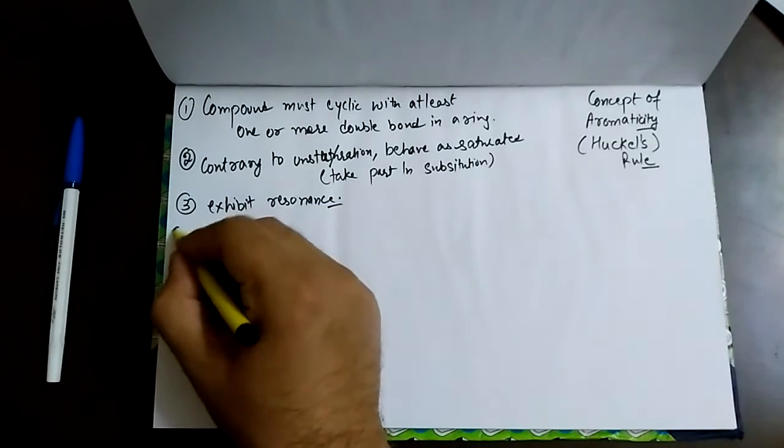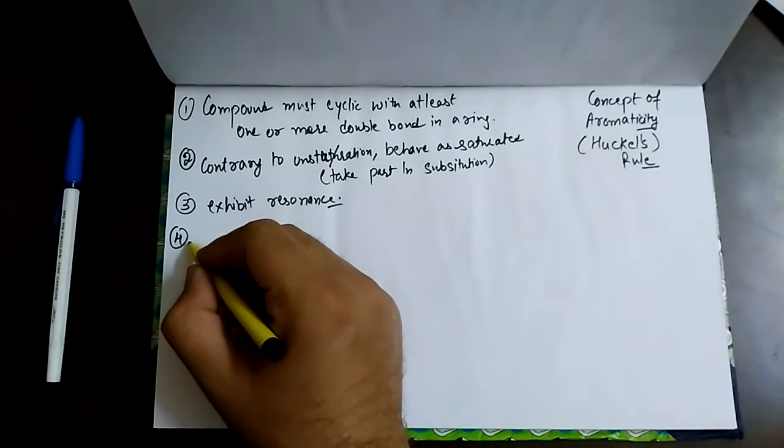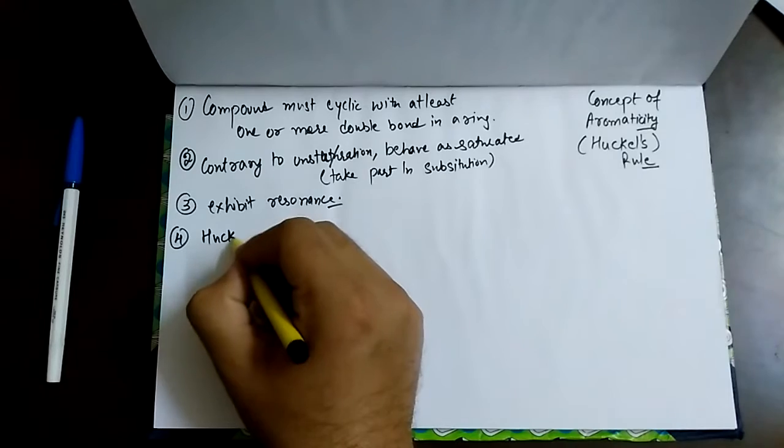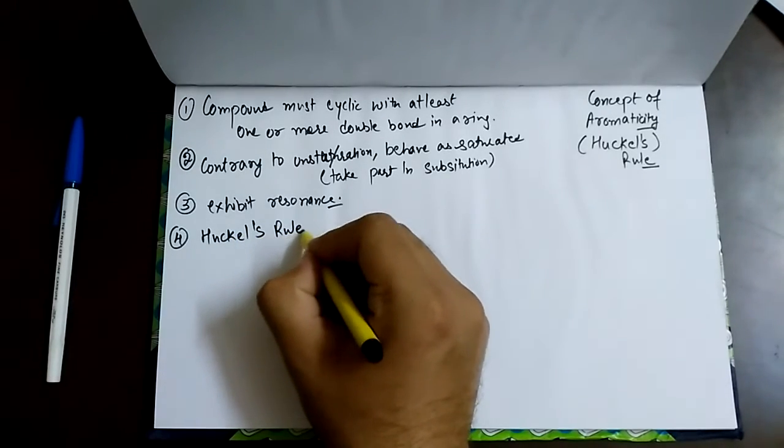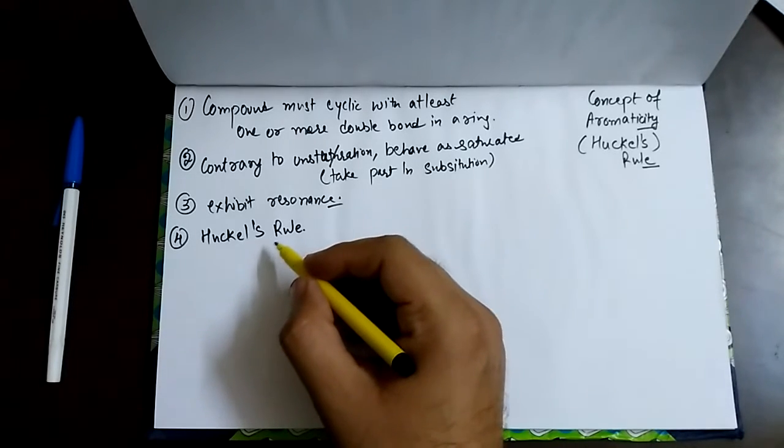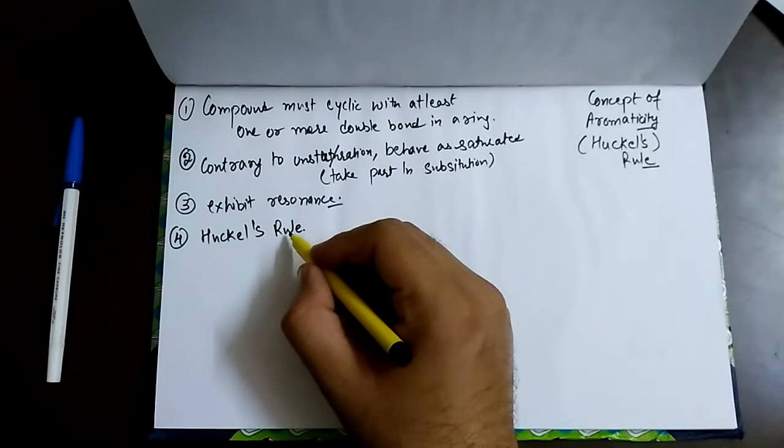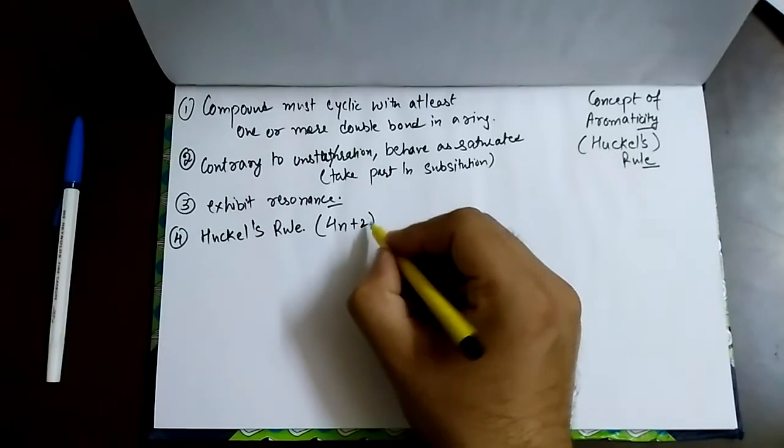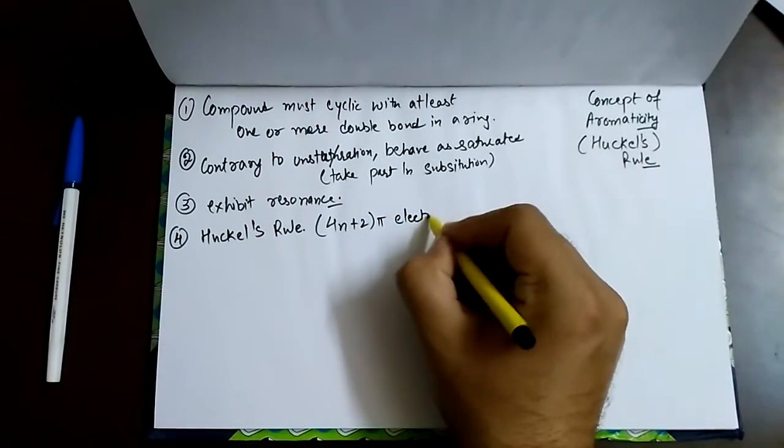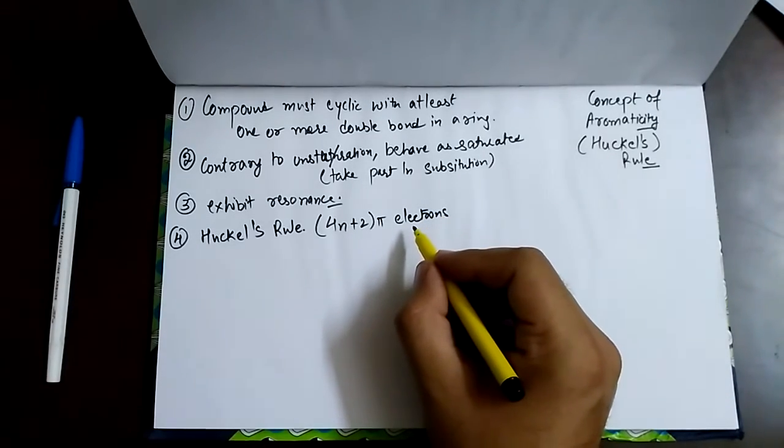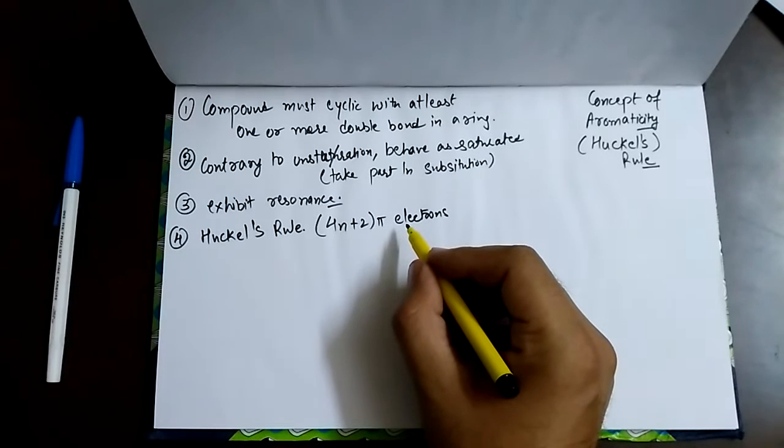The fourth rule, it must follow the criteria of obeying Huckel's rule. According to this rule, a cyclic compound will behave as aromatic if and only if it contains 4n plus 2 pi electrons. If a compound does not contain this many pi electrons, we say it is not having aromatic character.